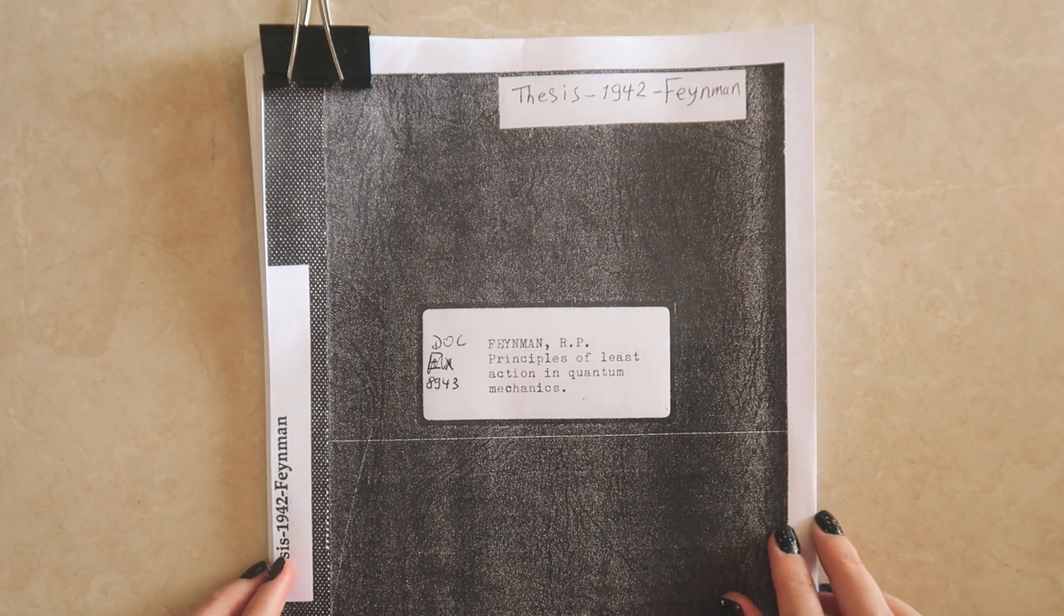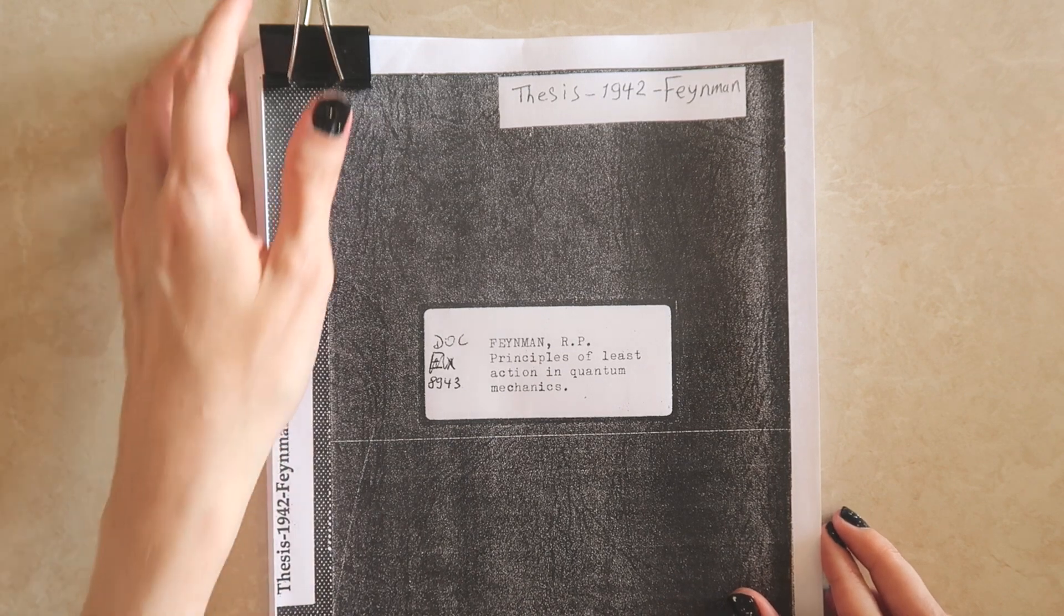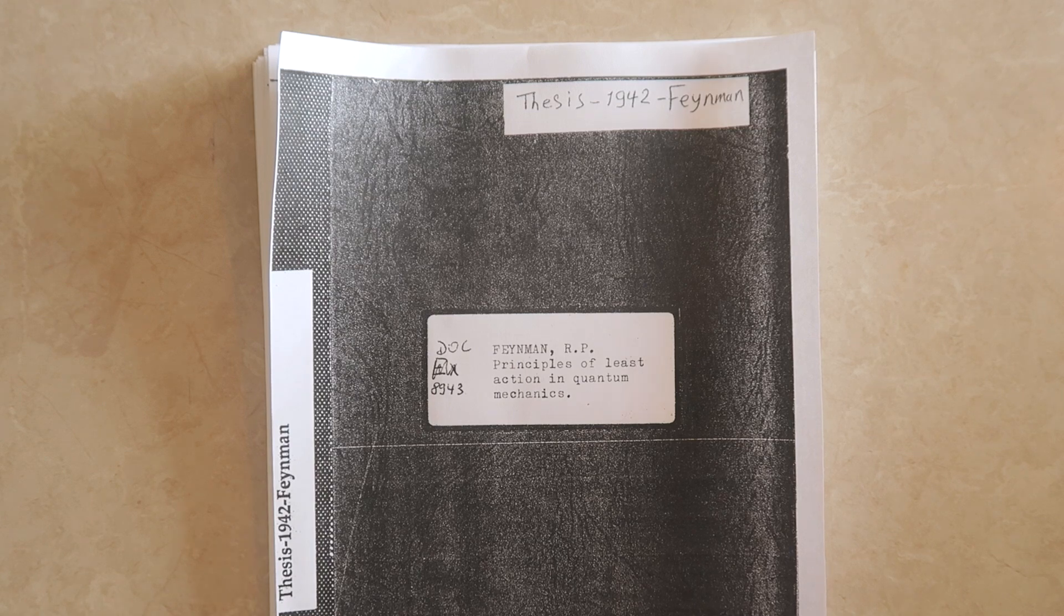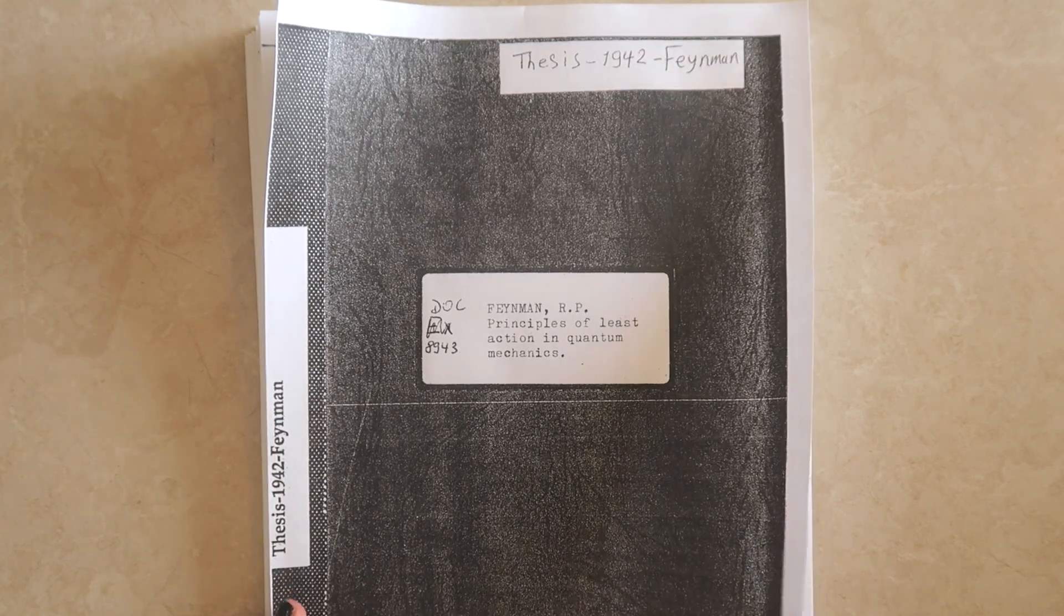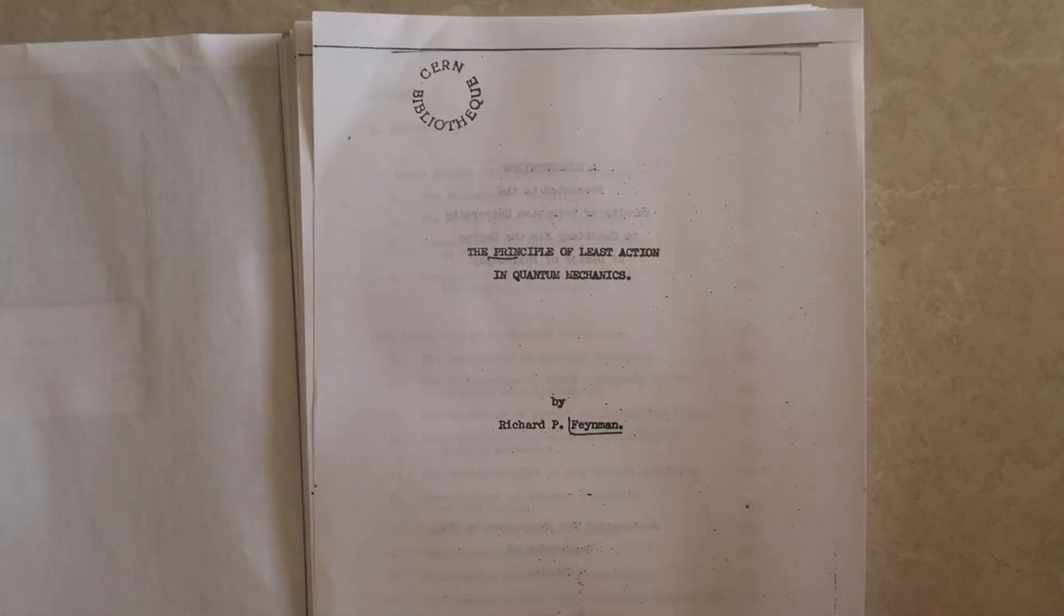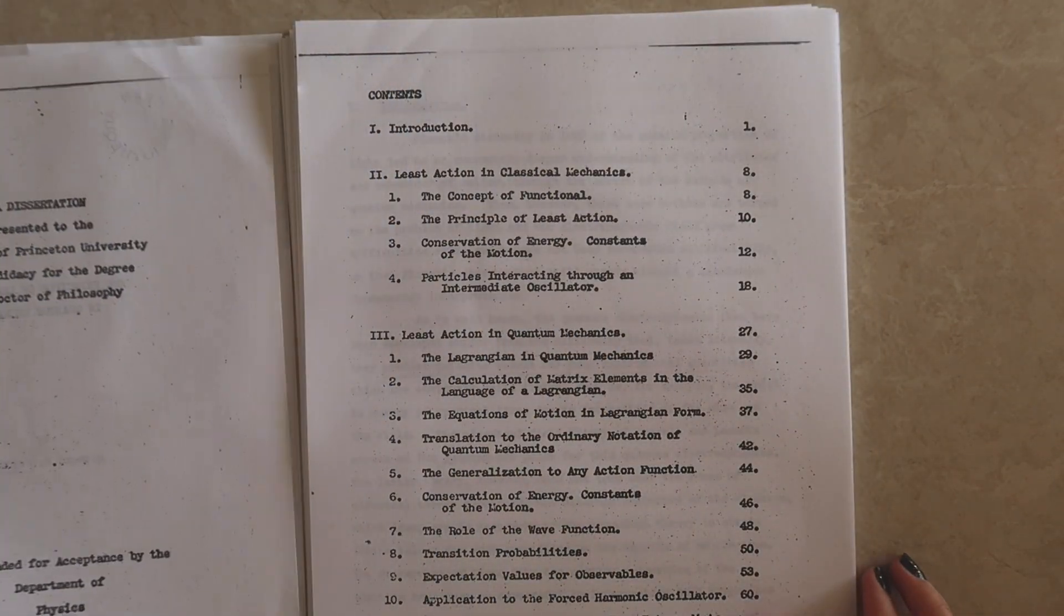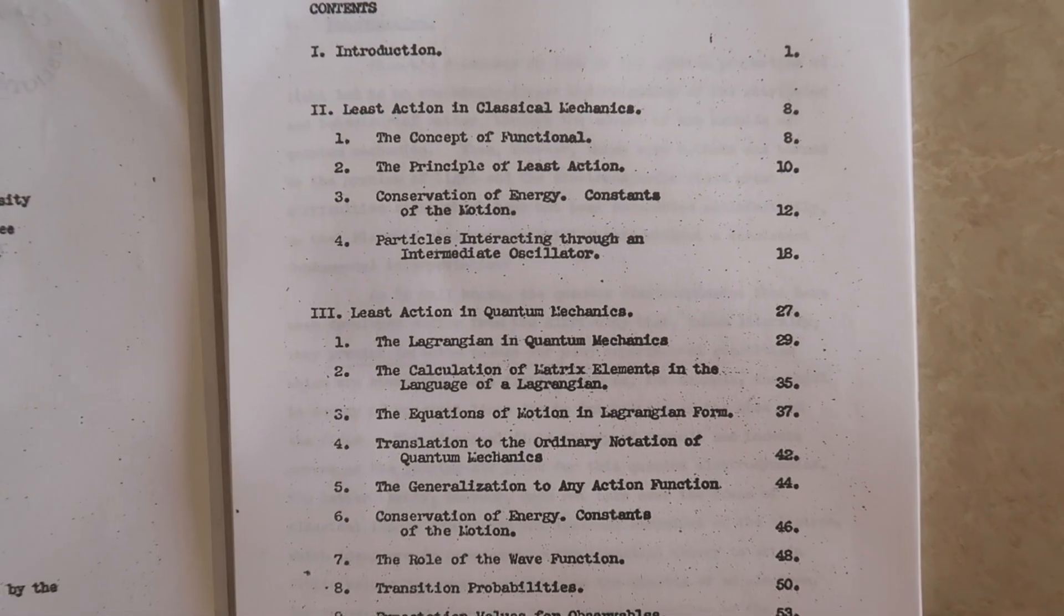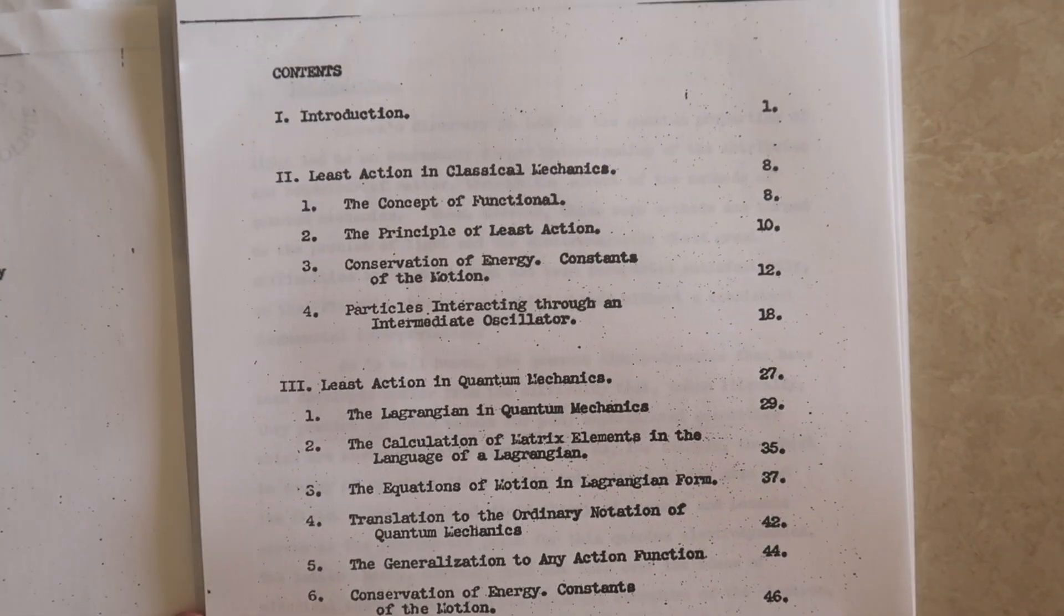There will be a link down to this document in the description so you can read along at home if you'd like to. There'd also be some links to various further reading sources so that you can get more of an explanation than I've got time to go into today. So let's have a little start with the contents page. We'll read through what each section is and give a brief overview.